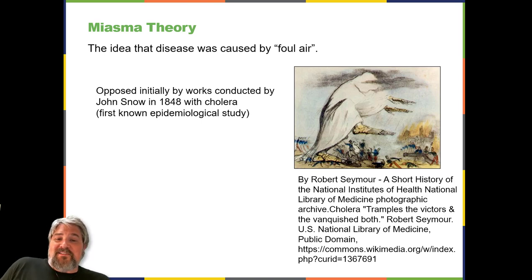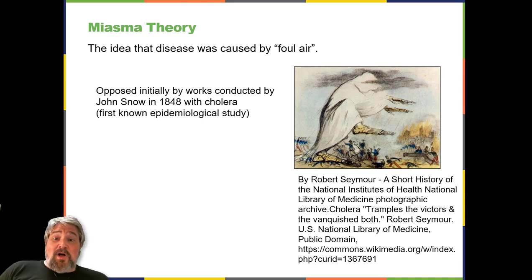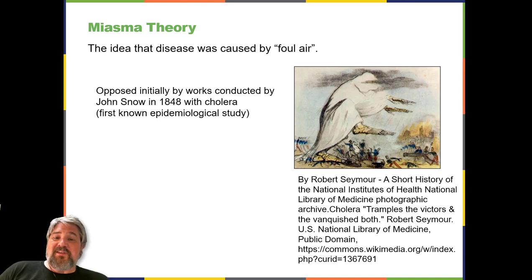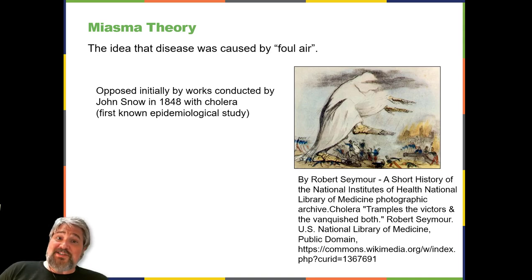Although the work of Simmelweis and Snow successfully showed the role of sanitation in preventing infectious disease, the cause of disease was not fully understood. The subsequent work of Louis Pasteur, Robert Koch, and Joseph Lister would further substantiate the germ theory of disease. While studying the causes of beer and wine spoilage in 1856, Pasteur discovered properties of fermentation by microorganisms. He demonstrated with his swan neck flask experiments that airborne microbes, not spontaneous generation, were the cause of food spoilage, and he suggested that if microbes were responsible for food spoilage and fermentation, they could also be responsible for causing infection. This was the foundation for the germ theory of disease.